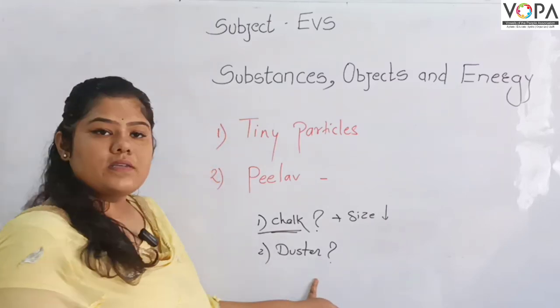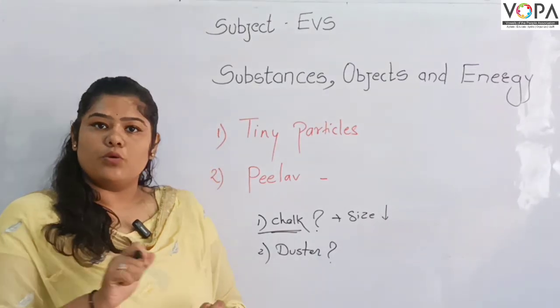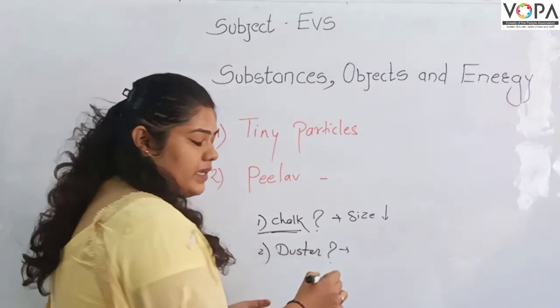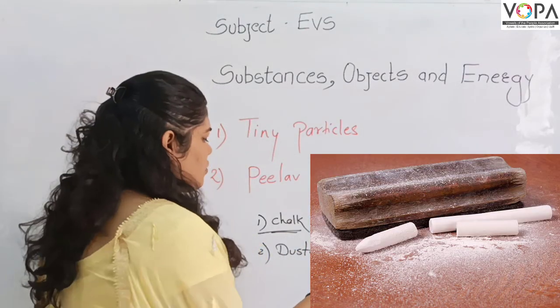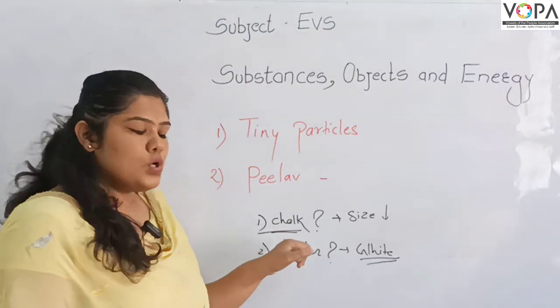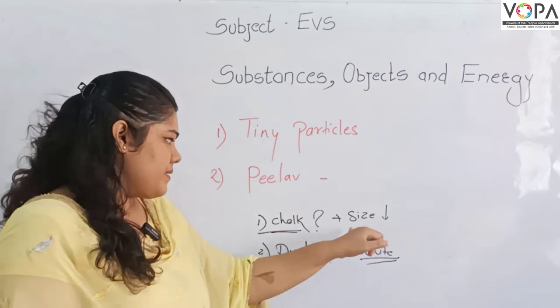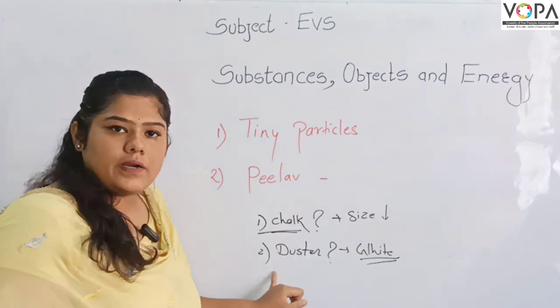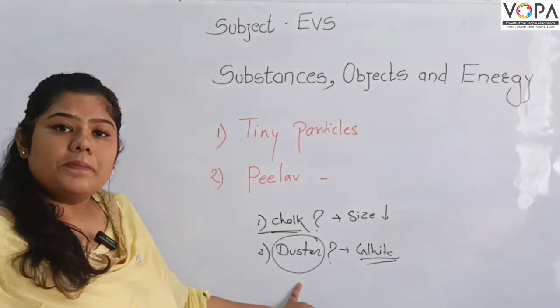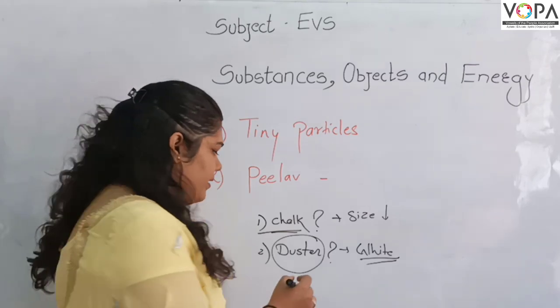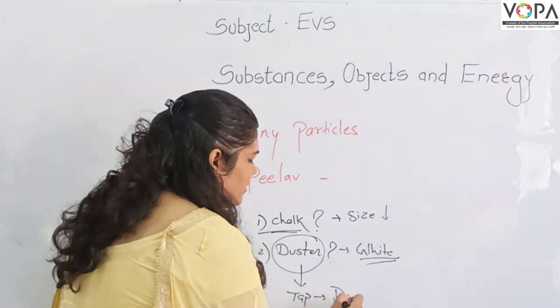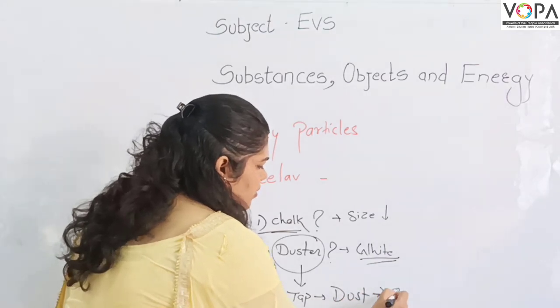Now take the duster and observe it. When you wipe with the duster, what happens? The dust goes where? What happened? It becomes white dust. This shows that when you wrote with chalk and its size decreased, those particles went into the duster. When the particles went into the duster and you tap it, the dust that comes out - those are the chalk particles.